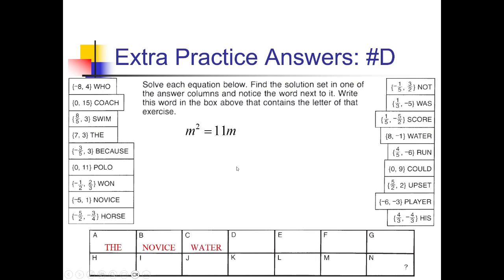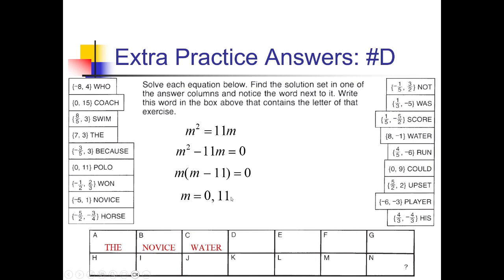To solve this problem, I'm going to zero things out first by subtracting that 11m from both sides. I notice I've only got two terms and they have a common factor of m that I can take out, leaving me with m minus 11 inside. Setting each individually equal to 0 and solving, we have m equals 0. And if m minus 11 equals 0, add 11, we get 11 for the other m value. So 0 and 11 — that's where 'Polo' ends up, in the D spot.